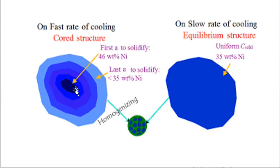With fast cooling rate we get a cored structure: the center is rich in the high melting element (nickel), and as we move outward the nickel percentage decreases while copper increases. The alloy may melt before the temperature prescribed by the phase diagram, resulting in failure.